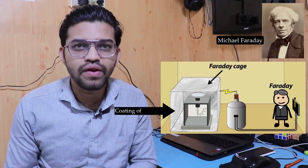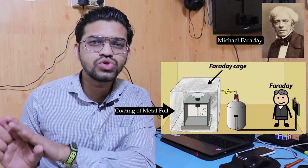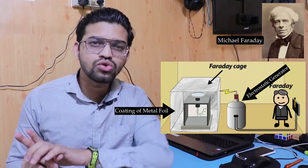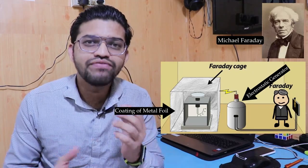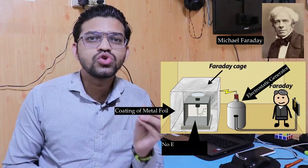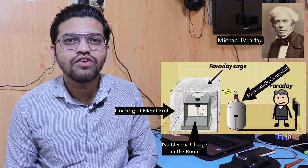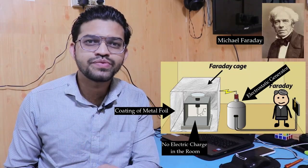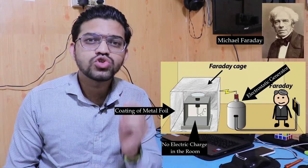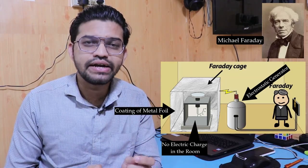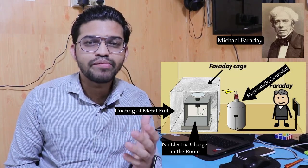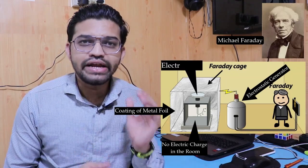So why does this happen? To demonstrate this experiment, he built a room, coated it with a metal foil, and used an electrostatic generator to produce electrical discharge on that particular room. He found out that there was no electrical charge present inside the room — the exterior part got covered with the electrical charge, but inside there was no electrical charge present. He measured the inside portion of that room with the help of an electroscope.